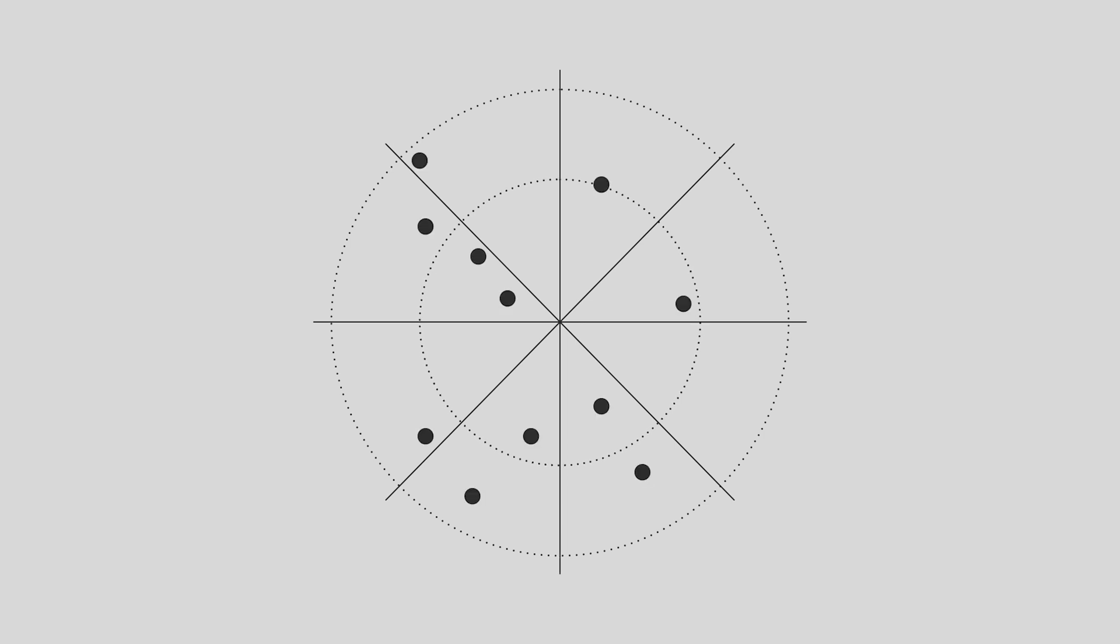Think of proof-of-stake like a game of darts. The network throws darts at a dartboard broken up into a pie chart based on stake, and the dart can land anywhere with equal likelihood. The bigger the stake, the larger the area on the dartboard and thus the greater likelihood of being hit with a dart. When your stake is hit with a dart, you can produce a block.